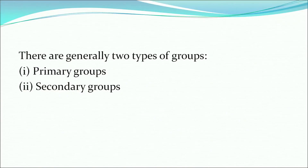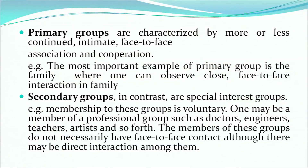There are mostly two types of groups: primary groups and secondary groups. Primary groups are generally characterized by more or less continued, intimate, face-to-face association and cooperation. The most common example of a primary group is the family, where one can observe close, face-to-face interactions. Secondary groups, in contrast, are special interest groups where membership is voluntary. One may be a member of a professional group like doctors, engineers, teachers, or artists. The members of these groups do not necessarily have face-to-face interaction, although there may be direct interactions among them.